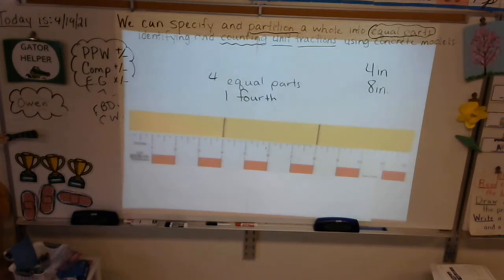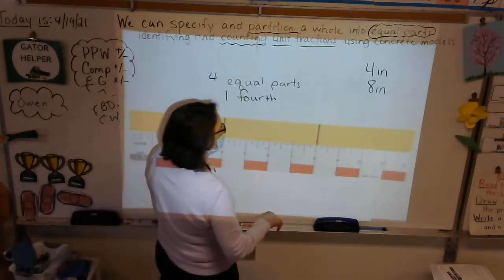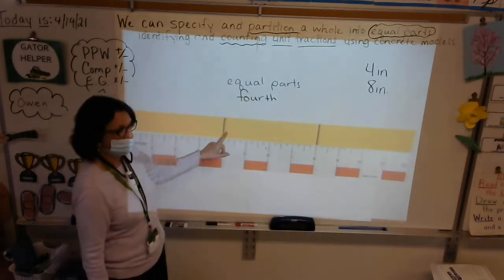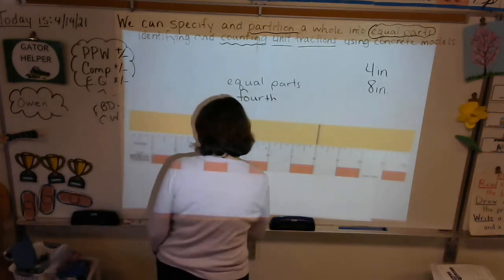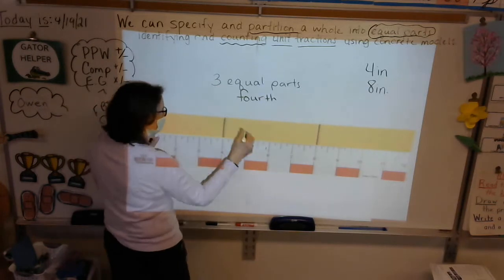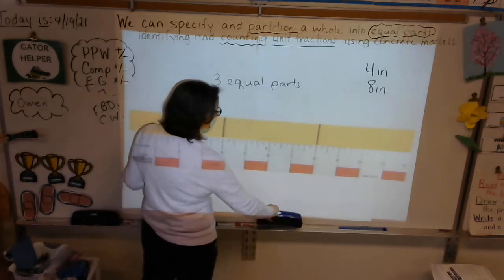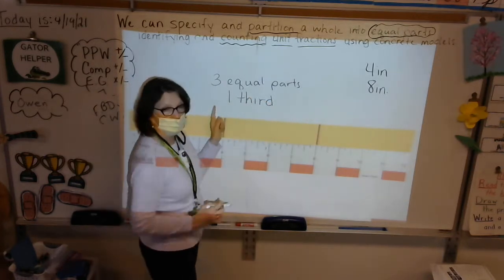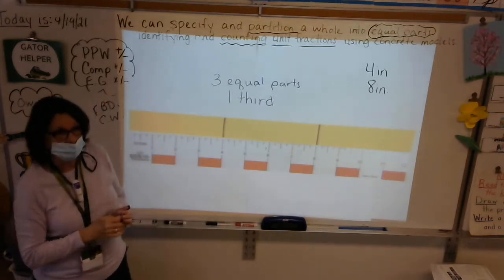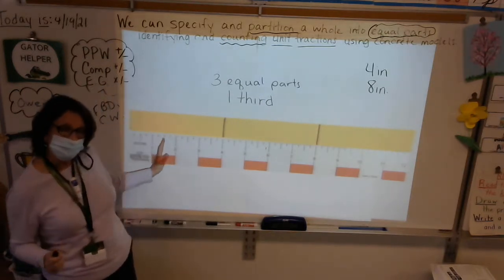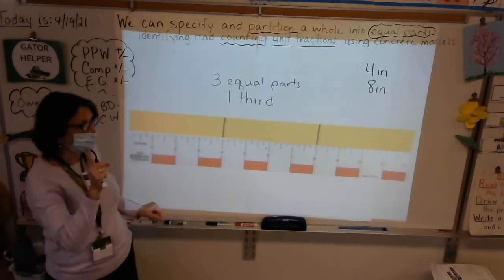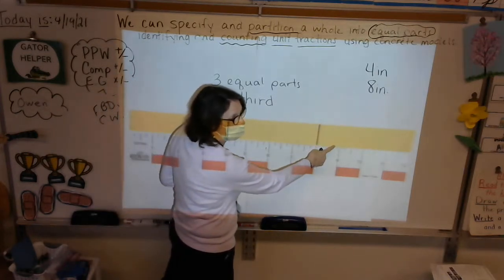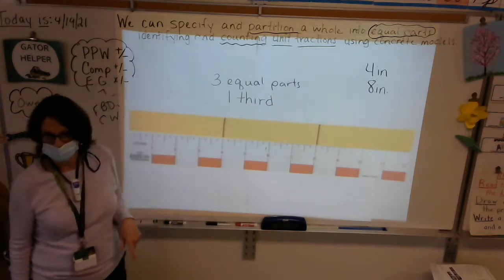When we drew our lines at four inches and eight inches, how many equal parts did we end up with? Let's count: one, two, three — we had three equal parts. They're no longer fourths. When we have three equal parts, they are going to be called one third. Three equal parts means thirds. Let's count our units: one third, two thirds, three thirds. Very good!